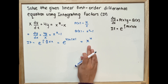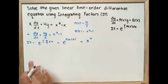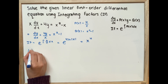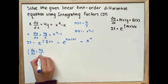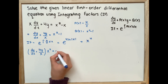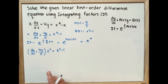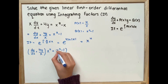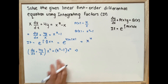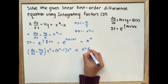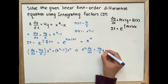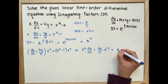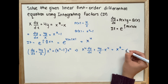Now we take our integrating factor and multiply it through our linear first-order differential equation. We get dy over dx plus 4y over x, all multiplied by x to the power of 4, equal to x squared minus 1 times x to the power of 4. Distributing gives us x to the power of 4 times dy over dx plus 4yx to the power of 3, which equals x to the power of 6 minus x to the power of 4.